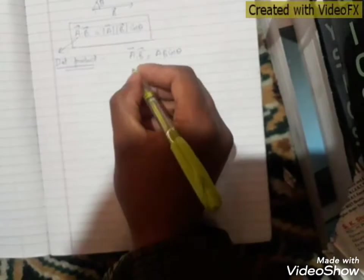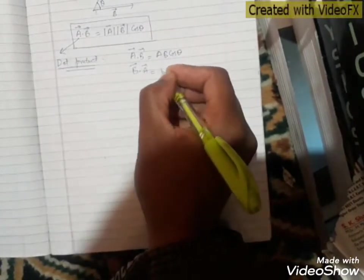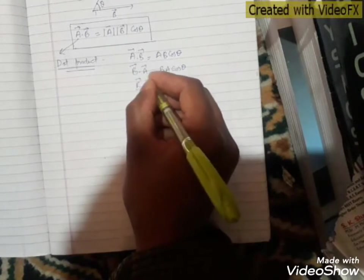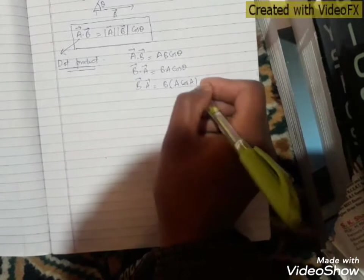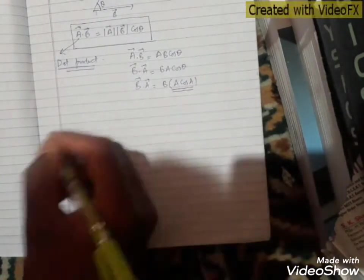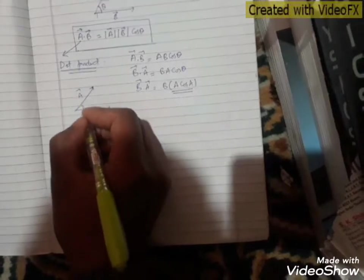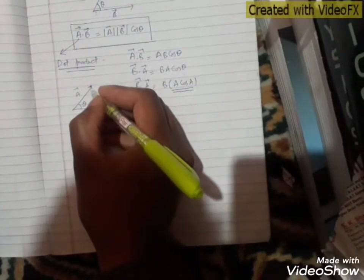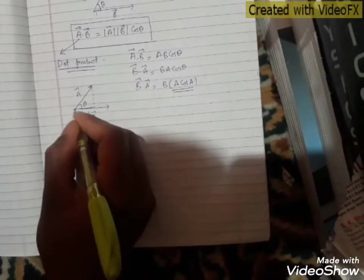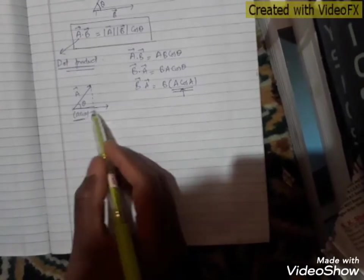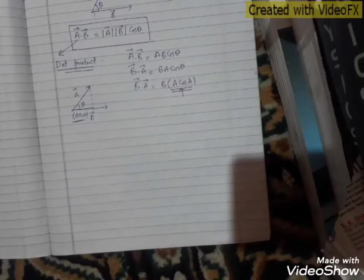Similarly, if we calculate B dot A, that is equal to BA cos theta. Now I will explain what A cos theta means here. Suppose you have two vectors — vector A and vector B — making some angle theta between them. If from that point we draw a perpendicular on vector B, then this projection is A cos theta. This A cos theta is the scalar component of vector A along the direction of vector B.